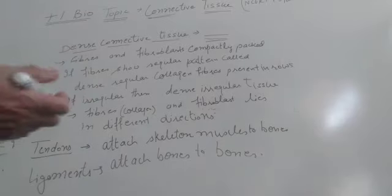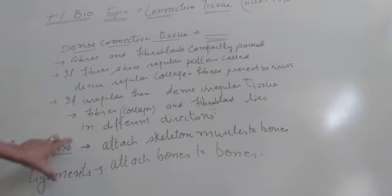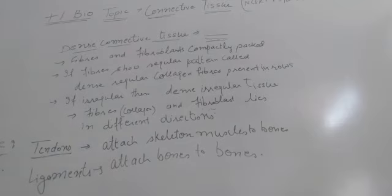And if they are in irregular pattern, if some are going here, some are going there, then we call it irregular dense tissue. Now, examples are tendons and ligament. These are also two examples of dense connective tissue.